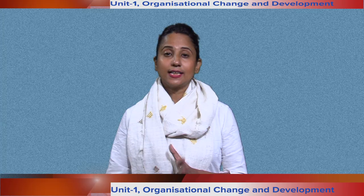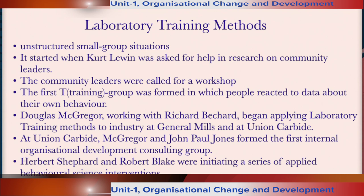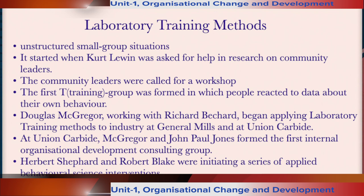The laboratory training method is essentially an unstructured small group situation in which participants learn from their own actions. It started in 1946, using various experiments to bring about change in the behavior of participants. It began when Kurt Lewin was asked for help in research on community leaders, who were called for a workshop. At the end of each session, researchers discussed the behaviors they had observed, and the T-group method was formed, in which people reacted to data about their own behavior and discussed openly their feelings, concerns, and emotions. Douglas MacGregor, working with Richard Becker, began applying the laboratory training method to industry at General Mills in 1956 and at Union Carbide in 1957.